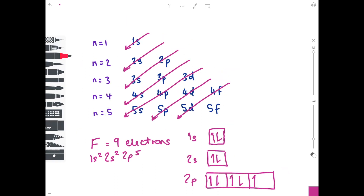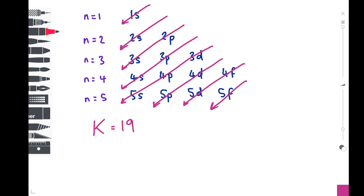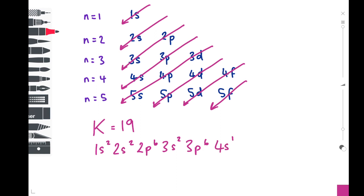Now we're going to use the example of potassium. Using the periodic table, potassium has an atomic number of 19, meaning its electron number is 19. Using the diagram and following the arrows: 1s², 2s², 2p⁶, 3s², 3p⁶. Counting up: 2+2 is 4, plus 6 is 10, plus 2 is 12, plus 6 is 18 — so we just need one more. The arrow points from 3p to 4s, which is why it's 4s¹.